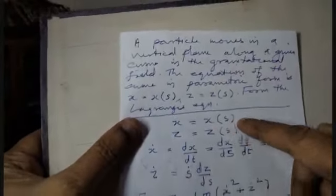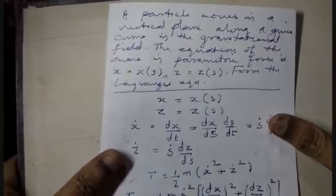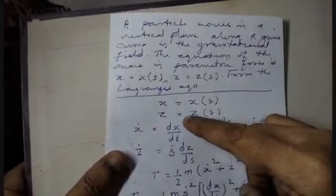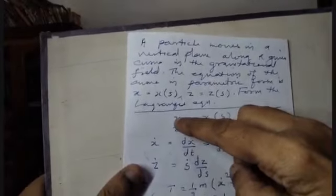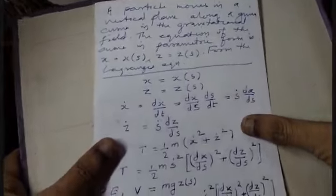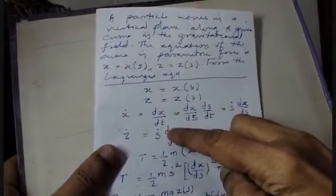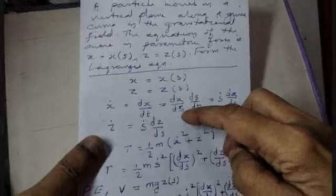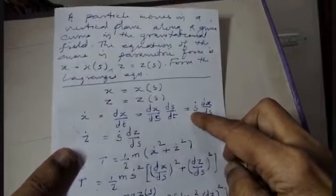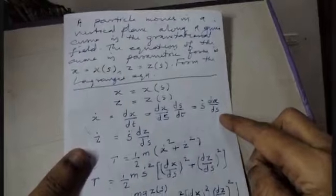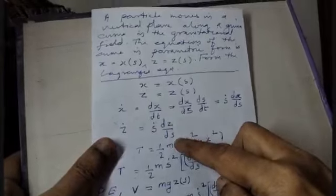With x equals x of s and z equals z of s, where s is the parameter, we express the velocities using the chain rule. x-dot equals dx/dt equals (dx/ds)(ds/dt), and similarly z-dot equals ṡ times dz/ds, where ṡ is the time derivative of s.